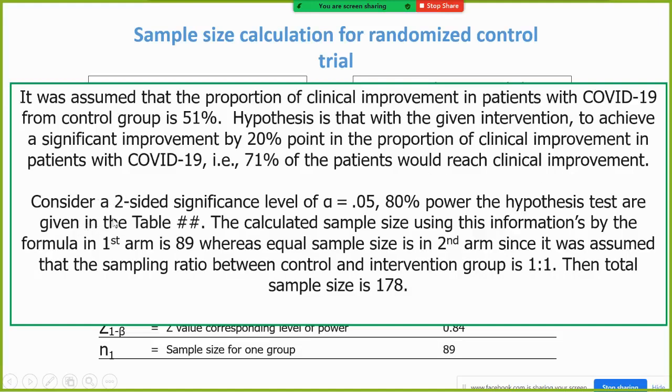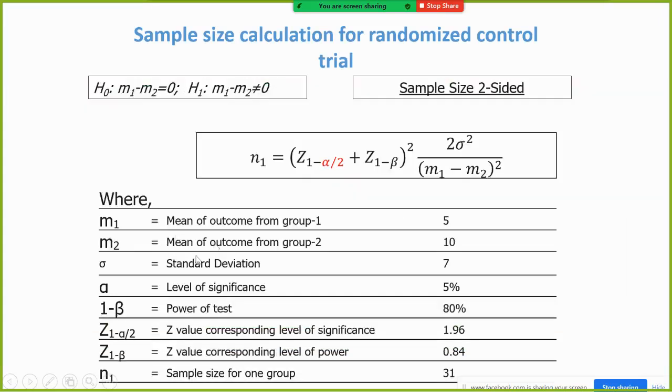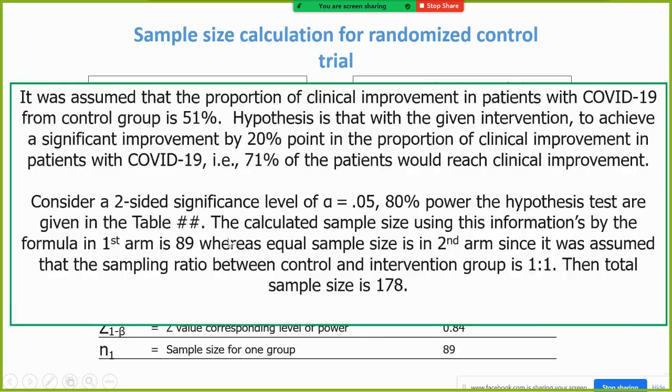Consider a two-sided significant level of alpha is equal to 0.05, 80% of the power. The hypothesis tests are given in the table. The calculated sample size using the formula in the arm one is 89.